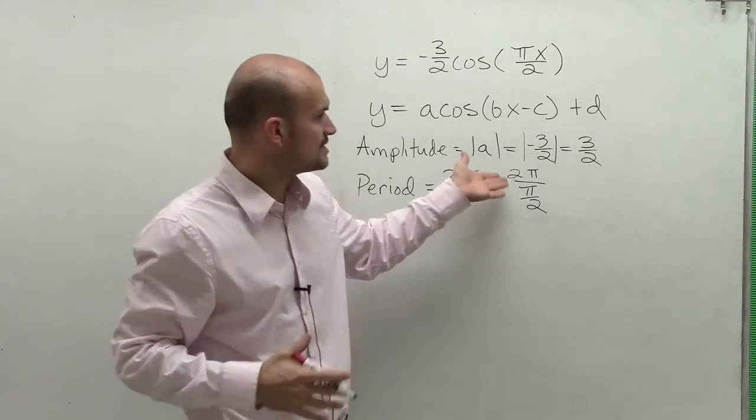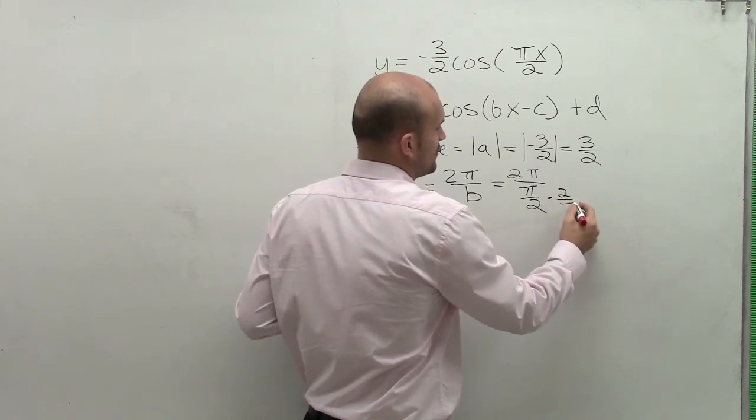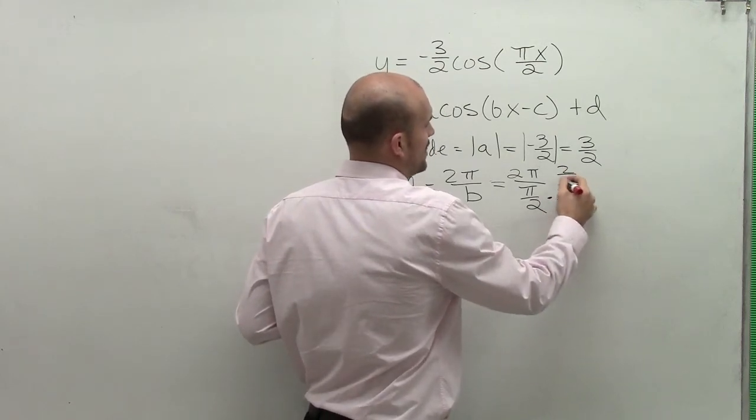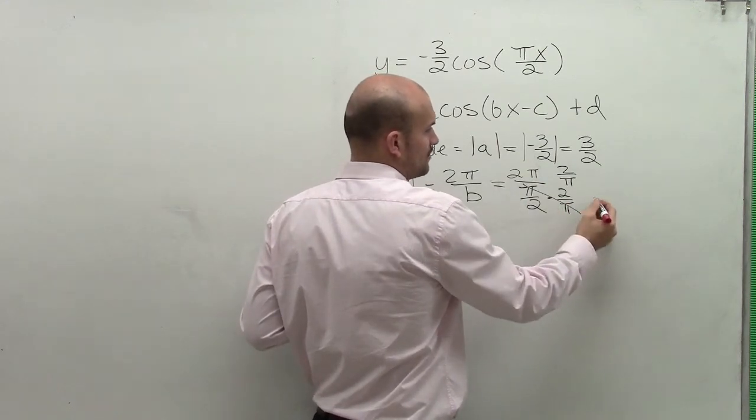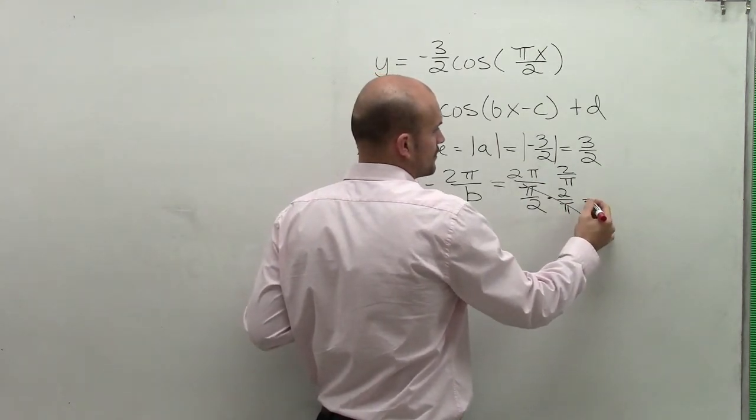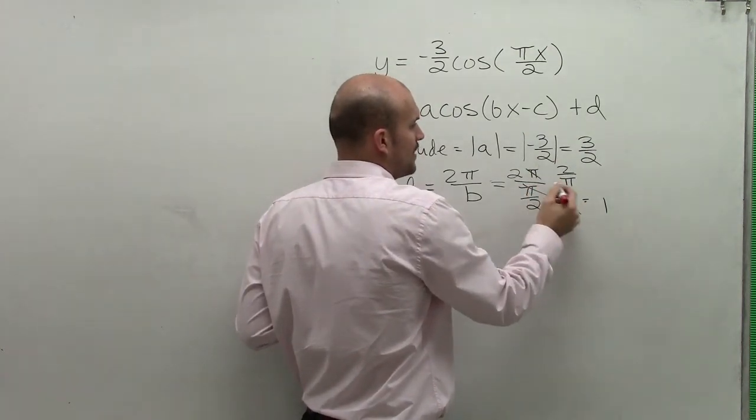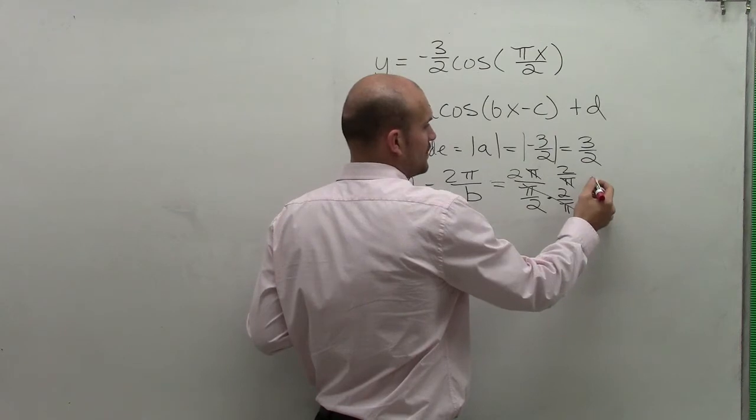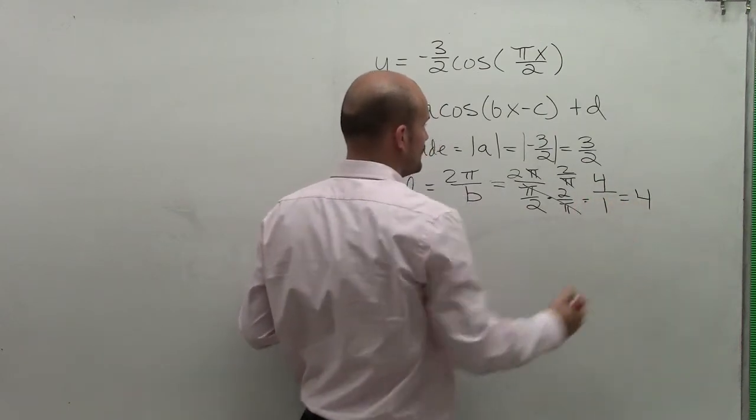Now remember, to simplify this, we can multiply by our reciprocal, which is 2 over pi, on the top and the bottom. Any number multiplied by its reciprocal multiplies into 1. And then 2 pi times 2 over pi, our pi's divide out into 1. Therefore, we're left with 2 times 2, which is 4 over 1, which equals 4.